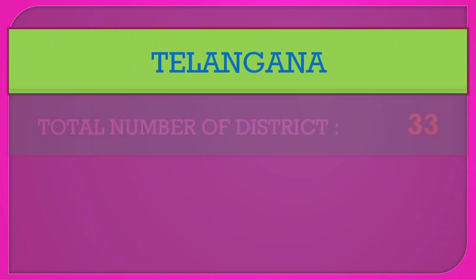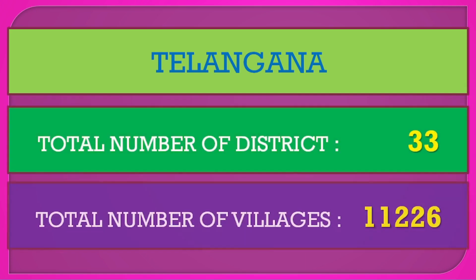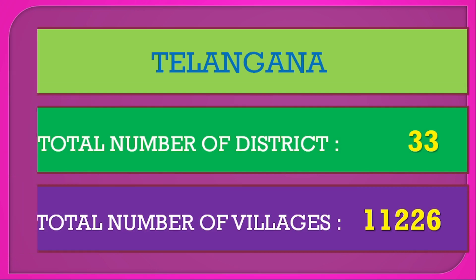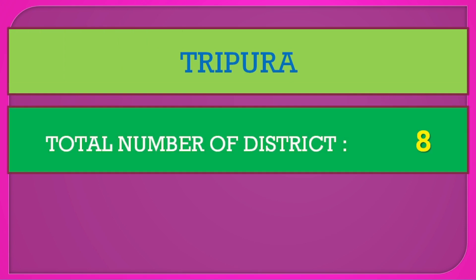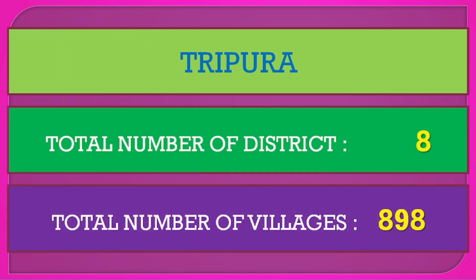Telangana: total number of districts 33, total number of villages 11,226. Tripura: total number of districts 8, total number of villages 898.